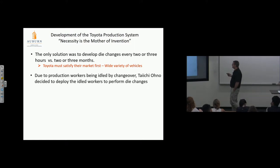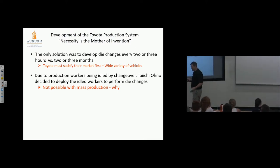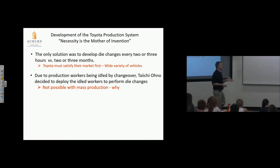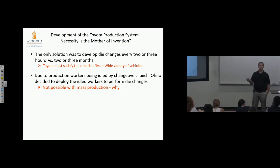Due to production workers being idled by changeover, Taiichi Ono decided to deploy the idle workers to perform the die changes. If I'm shutting the line down, I've got a batch of employees—why don't I just utilize them to rapidly change the die? Not possible in mass production. Why could you not do that in mass production? Labor is so specialized—they don't have variety of knowledge to do anything. Once unionized, they had classifications: electrician couldn't be a millwright, millwright couldn't do plumbing, operator on the line could do no technical work.